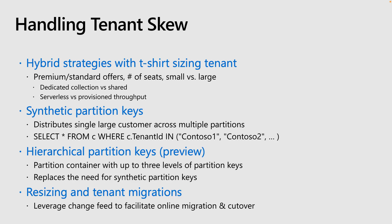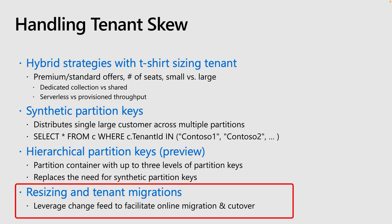A final note on handling tenant skew is around resizing and migrations. In some cases, you may need to migrate a tenant — for example, if they are on serverless and you need to move them to dedicated throughput. To do this, you can take advantage of the change feed. Every deployment of Cosmos DB includes a change feed that is automatically configured and always on. You can use this change feed to read all the data changes and history for that Cosmos DB account, which helps you facilitate an online migration and cut over.